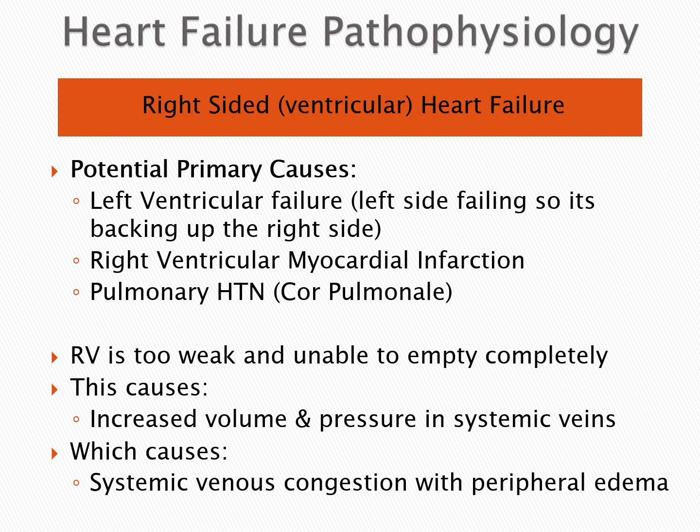Right-sided heart failure is when the right atrium and ventricle are too weak to pump blood from the periphery to the lungs. Right-sided heart failure can be caused by left-sided heart failure — the left side is too weak to pump blood out of the lungs and into the periphery, so it backs up into the right ventricle causing it to fail. It can also be caused by an MI in the right ventricle, where ventricular muscle damage leads to weakness. It can also be caused by pulmonary hypertension — the blood pressure in the pulmonary vessels is so high that the right ventricle cannot push blood into them, causing a condition called cor pulmonale.